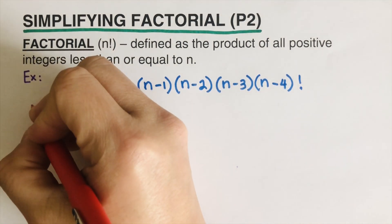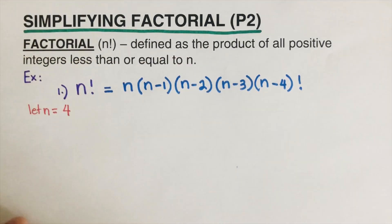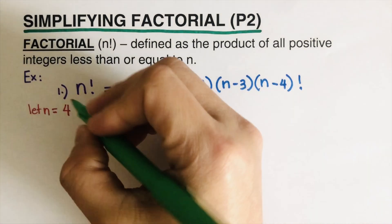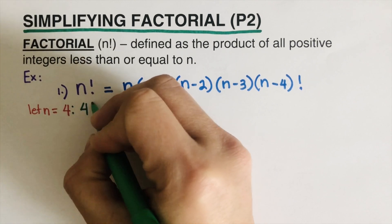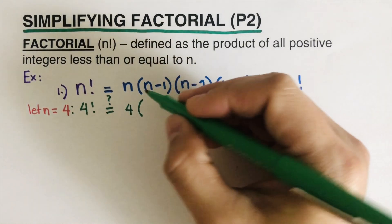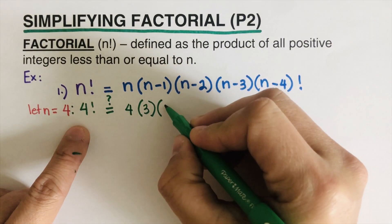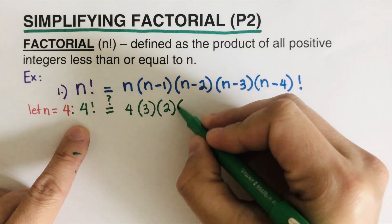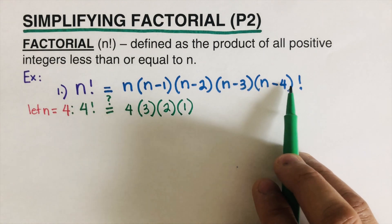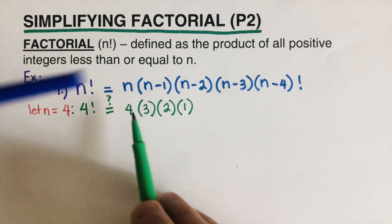Let's illustrate how this works. Let n equal four. So let's check if this notation is correct. Four factorial: n is four, so that's four times (four minus one) is three, times (four minus two) is two, times (four minus three) is one, and we stop there. So this confirms the pattern — each term is a match.